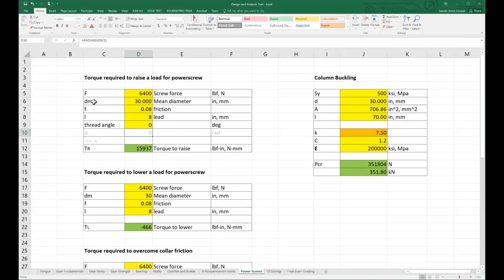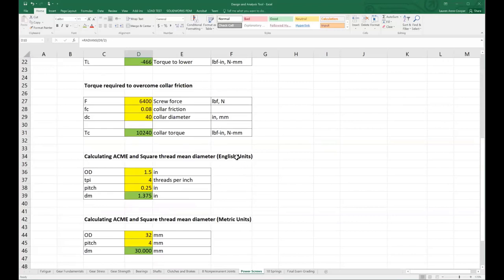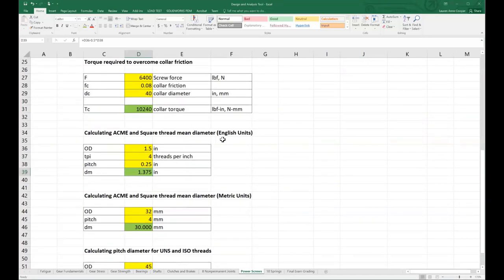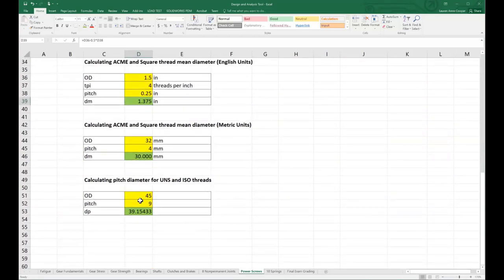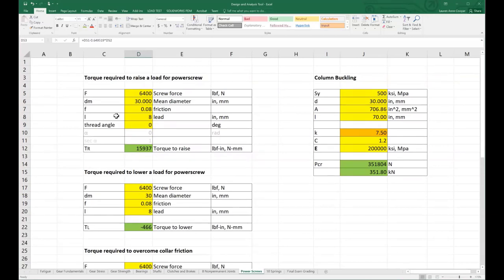As usual, I will show you how my analysis tool looks for this section on power screws. This is my analysis tool. I have torque required to raise a load, torque required to lower a load, torque required to overcome collar friction, calculating acme and square thread mean diameter for both English and metric units. That's the outer diameter minus half of the pitch—the same formula for both units. For UNS and ISO threads, your pitch diameter is the outer diameter minus 0.649519 times the pitch. If you calibrate your tool using example eight one, you will find a negative value for the torque required to lower a load, meaning you don't have a self-locking power screw.